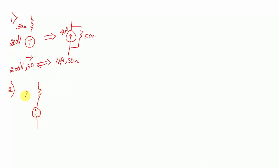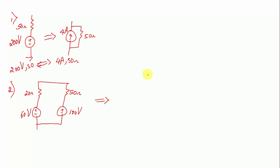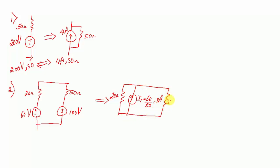In the second example, we have a voltage source of 60 V with a 20 Ω series resistor, and in parallel we have another voltage source of 100 V with a 50 Ω resistor. We need to convert both into practical current sources. The first current source I1 equals 60 divided by 20, which is 3 amperes with 20 Ω in parallel. The second current source I2 equals 100 divided by 50, which is 2 amperes with 50 Ω in parallel.